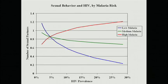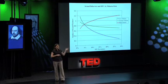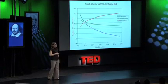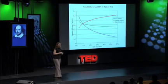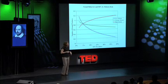This figure shows what happens to the number of sexual partners as HIV prevalence increases, in areas with low, medium, and high malaria. In the areas with low malaria — the blue line — the number of sexual partners decreases a lot as HIV prevalence goes up. In areas with medium levels of malaria it decreases some, but not as much. In areas with high malaria, it's actually increasing slightly, though not significantly. This is not just true of malaria: young women in areas with high maternal mortality change their behavior less in response to HIV than women in areas with low maternal mortality.